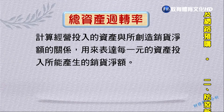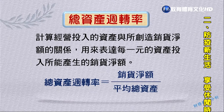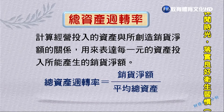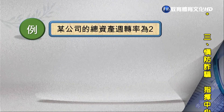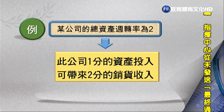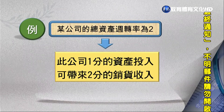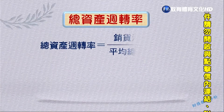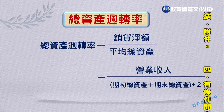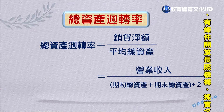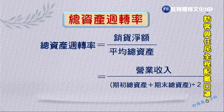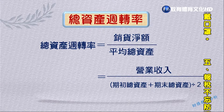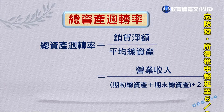首先介紹總資產周轉率。總資產周轉率是計算經營投入的資產所創造的銷貨金額的關係，用來表達每一元投資資產能產生多少銷貨金額。計算公式是：總資產周轉率等於銷貨金額除以平均總資產。若某公司總資產周轉率為二，表示一分的資產投入可帶來兩分的銷貨收入。分母採平均觀念，即期初總資產加期末總資產除以二。